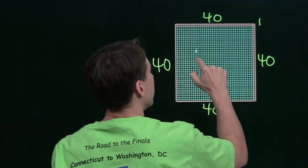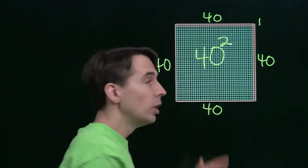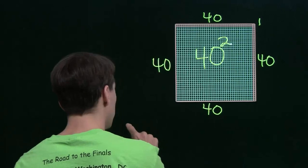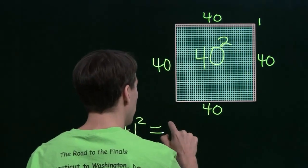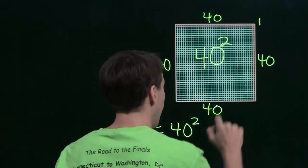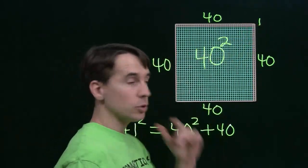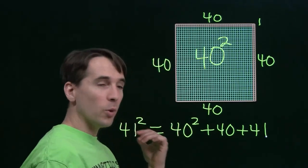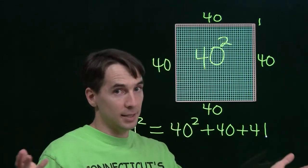So this middle space here has 40 squared little squares. So to count all the little squares in this whole picture, which is, of course, 41 squared little squares, I start with the 40 squared in the middle, and that's easy to compute. 40 squared is just 1600. I add the 40 over here, the 40 extras in this column, and then the 40 and the extra 1 across the top. That's another 41. So to get to 41 squared, I start with 40 squared, 1600, I add 40, and I add 41, and I get 1681.